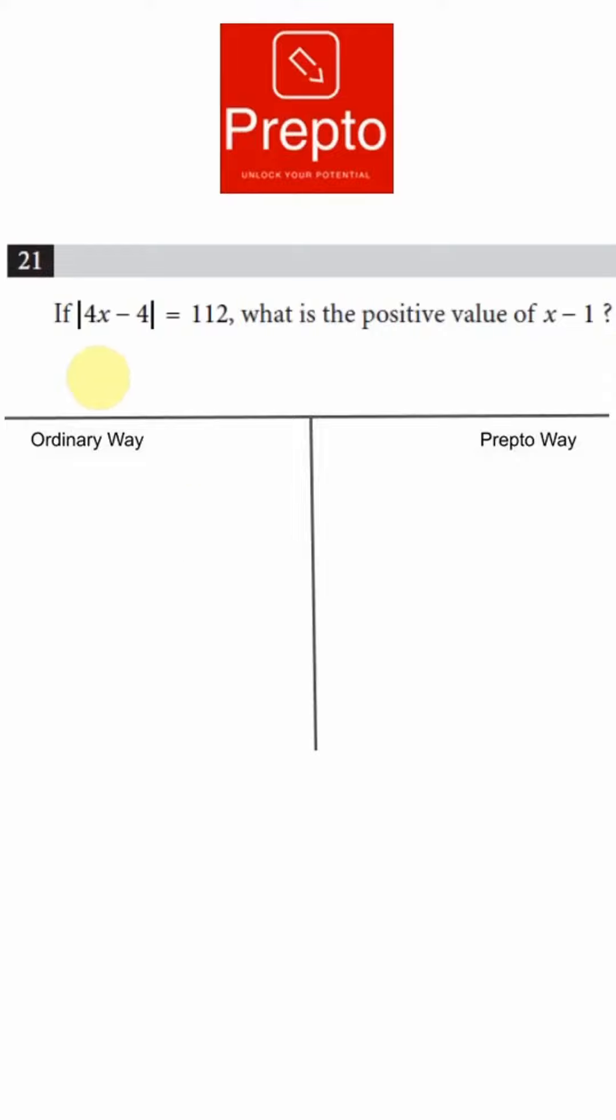Hey Preptas, hope you are doing well. Here is a modulus question. You have mod of 4x minus 4 is equal to 112, and you have to find the positive value of x minus 1.